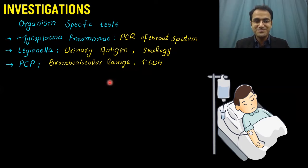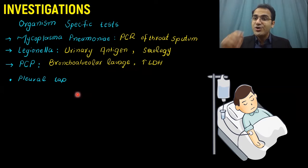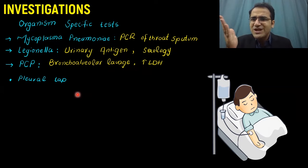You can also perform a pleural tap if there is pleural effusion — tap the effusion and send the sample for cell count. If the predominant cells are neutrophils, it is most likely bacterial; if lymphocytic, it can be TB or viral infection. You can also stain organisms from the pleural effusion sample.